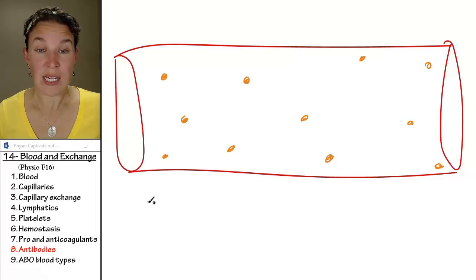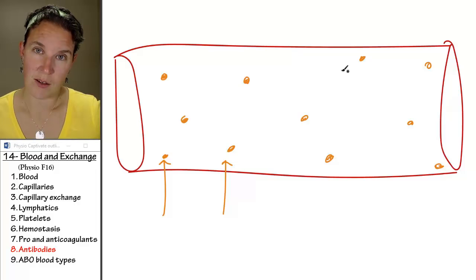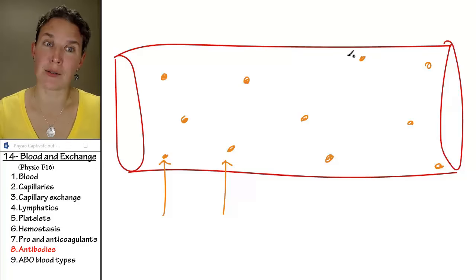Plasma proteins provide the osmotic pressure that brings fluid back into the capillary so that you don't end up like a blueberry, like Viola Beauregard. Thank you for that.